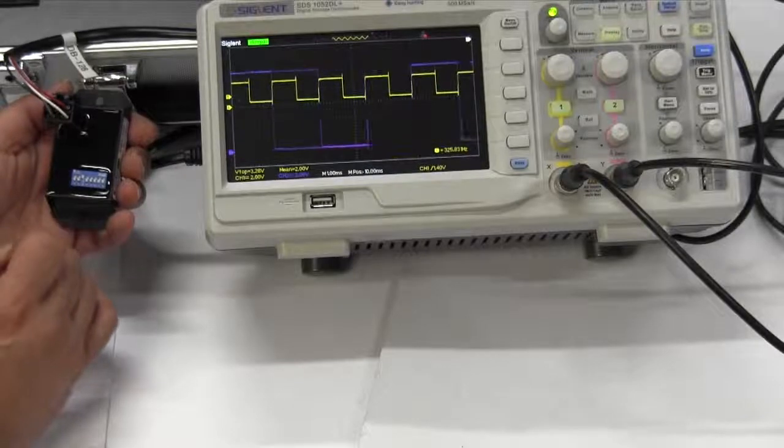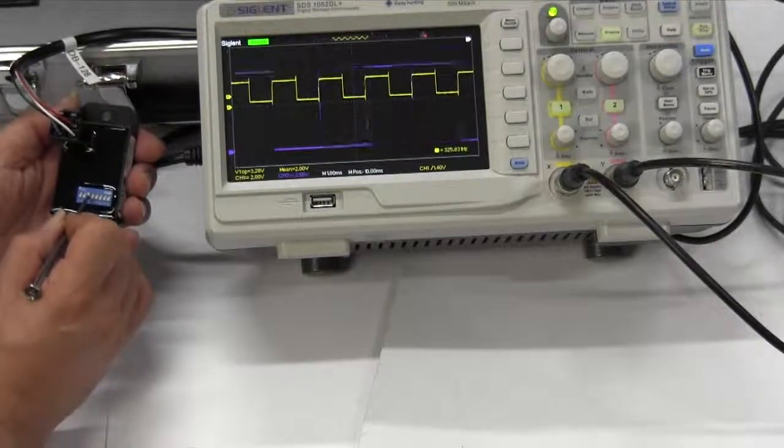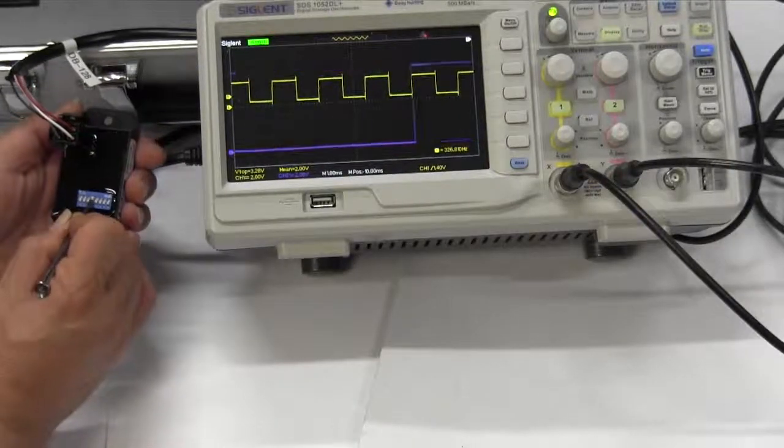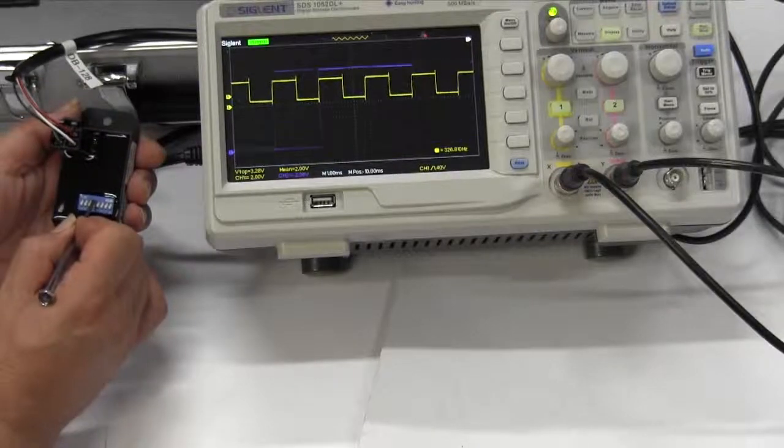We can adjust the DB1-128 in the field by changing the DIP switches. The DIP switches control how much we divide the input signal.